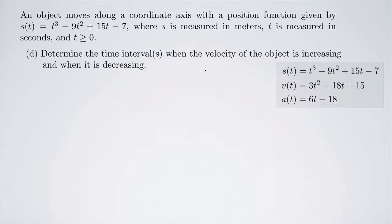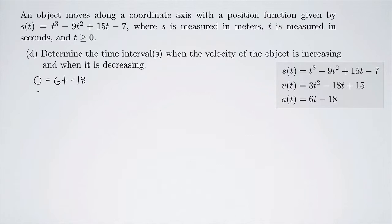Now we want to determine the time intervals when the velocity of the object is increasing and when it's decreasing. The first derivative of velocity — that is, the acceleration function — tells us when velocity is increasing or decreasing. We set the acceleration equal to zero: 6t minus 18 equals zero, so 6t equals 18, giving a critical point at t equals 3 seconds.